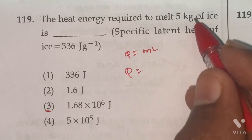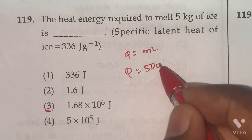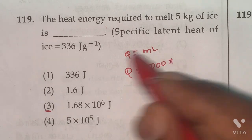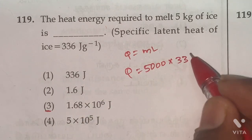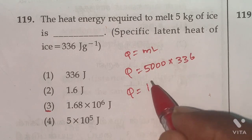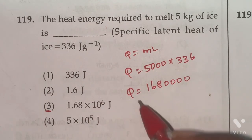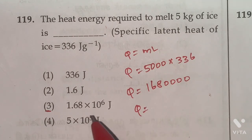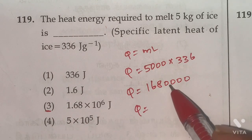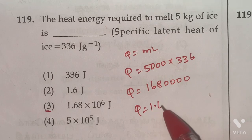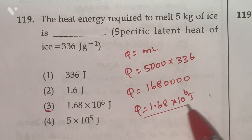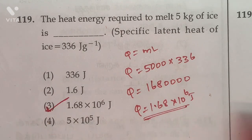Q is equal to 5 kg. If we convert into gram, 5,000 gram. So 5,000 into L value 336. So if we multiply, we will get 1,680,000 Joule. Then according to these options, we can convert 1, 2, 3, 4, 5, 6. So 1.68 into 10 power 6 Joule. So according to this option, 3rd one is the right answer.